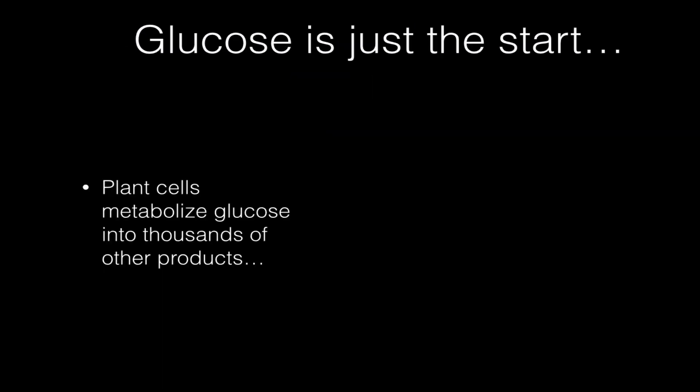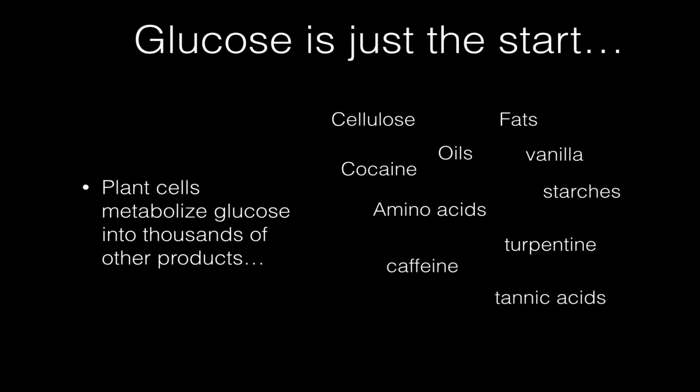Glucose is just the start. Plants can use glucose to metabolize thousands of other products. You probably have heard of some of these: cellulose, fats, oils, vanilla, drugs like cocaine, foods, starchy foods, amino acids, chemicals like turpentine which is used in paint thinners, caffeine, another drug from plants you probably have heard about.